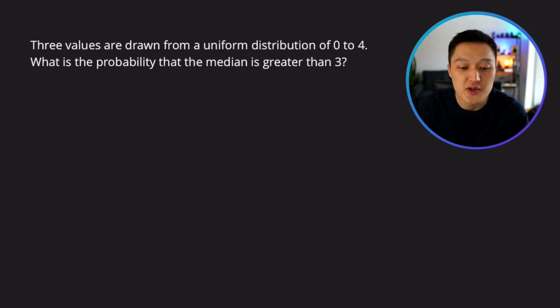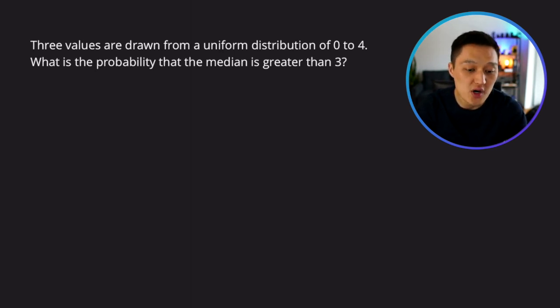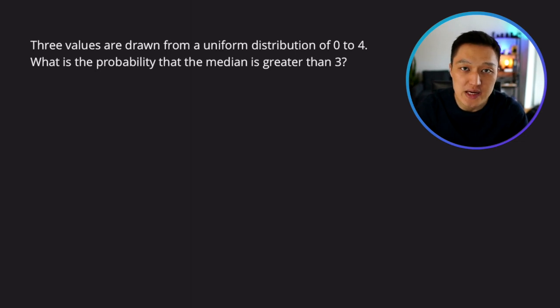Three values are drawn from a uniform distribution of zero to four. What is the probability that the median is greater than three?